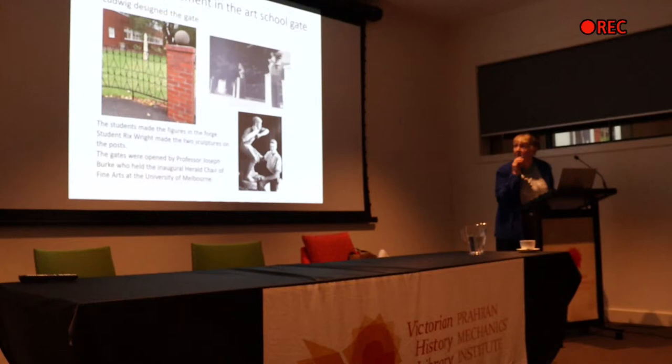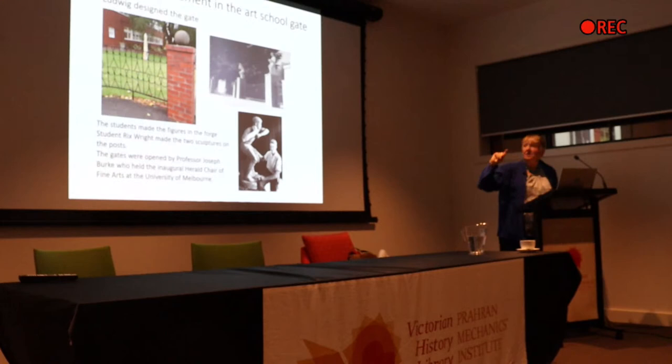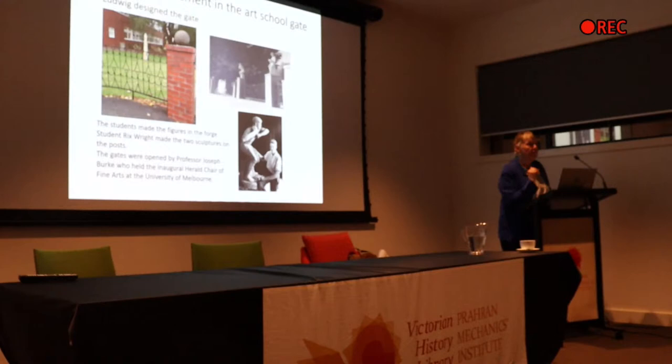He also designed the art school gates — you can see this theme again, people holding hands. This is one of his students, Vic Wright, whom he taught how to make these figures — they're three quarters of human size. You can see those two at the front when you go to Geelong Grammar. Vic Wright went on to live at Wymbarr and you can see some of his work — he continued on with that sort of sculpture. They were cemented and I think they've bronzed them now.